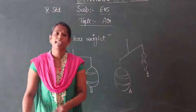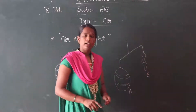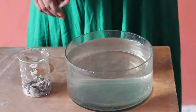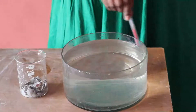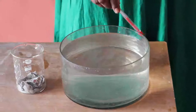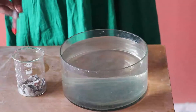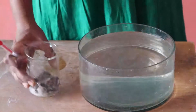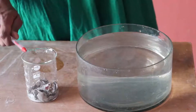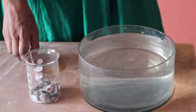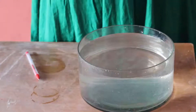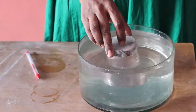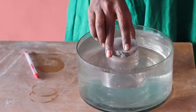Here is another property: air occupies space. See, children, this is a glass tumbler. The next property is air occupies space. This is a glass trough made of glass, filled with water. I will place some paper inside the glass tumbler. When we invert this glass tumbler in the water, I will slightly tilt the glass tumbler.